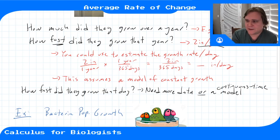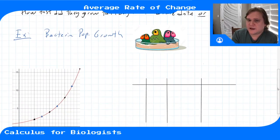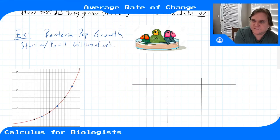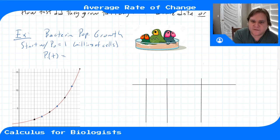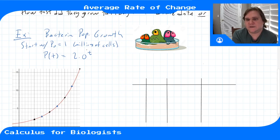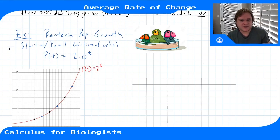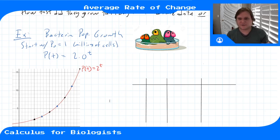But if you wanted to know maybe they grew faster in the first half of the year than the second half, you need more data or a model that accounts for that. So let's start with an example where we do have a function. We'll go back to our classic bacterial population growth example: we have bacteria sitting in a petri dish. Let's say we start with p₀ equals one million cells, and the growth rate is two. We've decided this can be modeled by the function p(t) = 2.0^t.